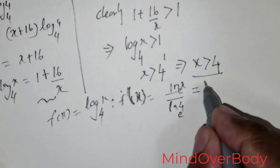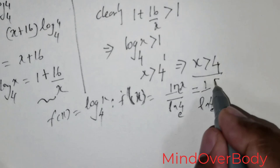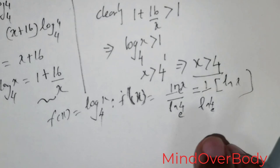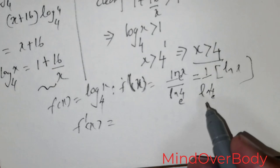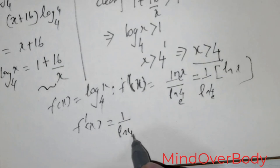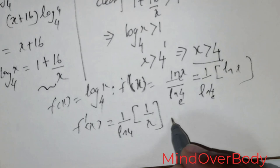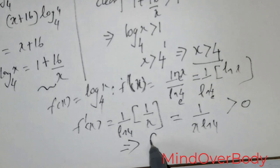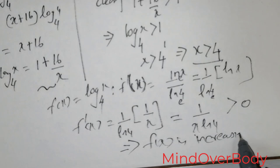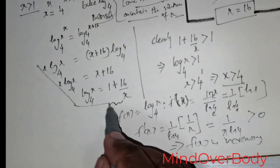This can be written as 1 over ln 4 times ln x. Finding f prime of x: since 1 over ln 4 is a constant, differentiation of ln x gives 1 over x, so f prime of x equals 1 over x times ln 4. This is strictly greater than zero, which means the function f of x is an increasing function.